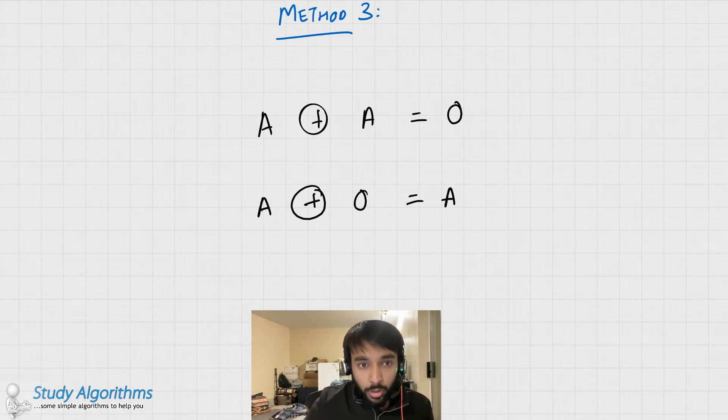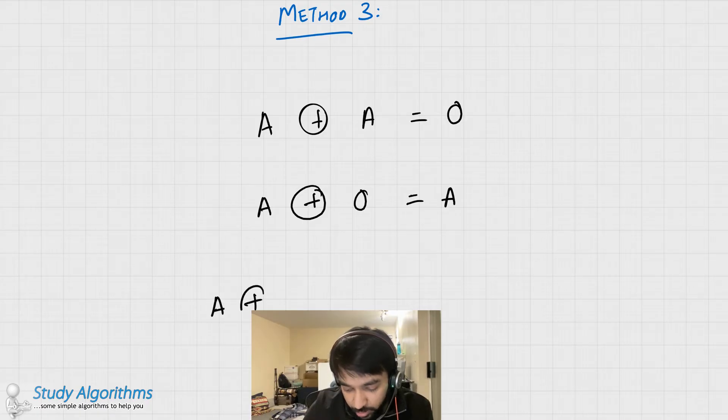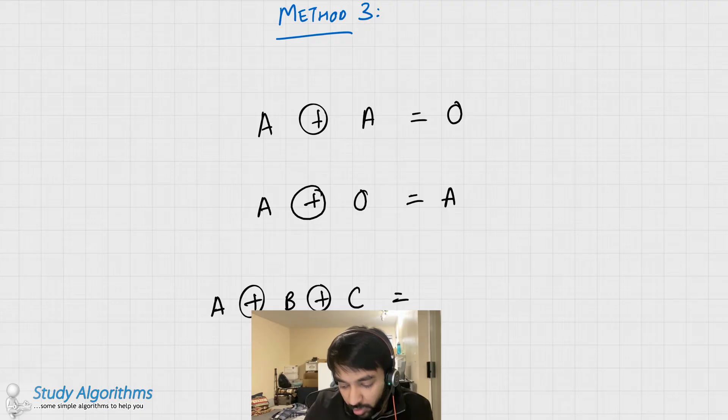You must also know that the XOR operator is commutative, which means to say that a XOR b XOR c would give you the same result as a XOR c XOR b.